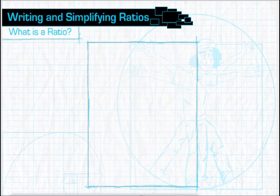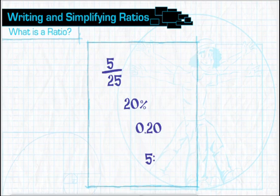Ratios can be written several ways: either as a fraction, as a percent or decimal, or as two numbers separated by a colon.